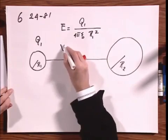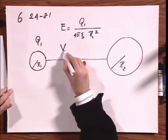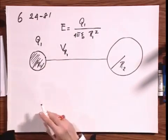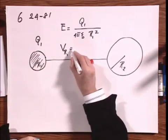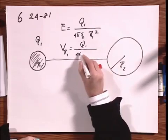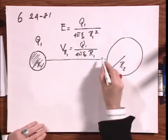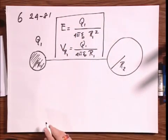And the potential at the surface, or not even at the surface, if this is a solid sphere, then the potential is the same everywhere throughout the sphere, would be Q1 divided by 4 pi epsilon zero R1. That's something that should now be quite obvious after we have done this assignment.